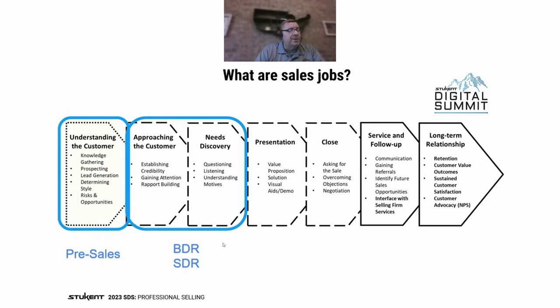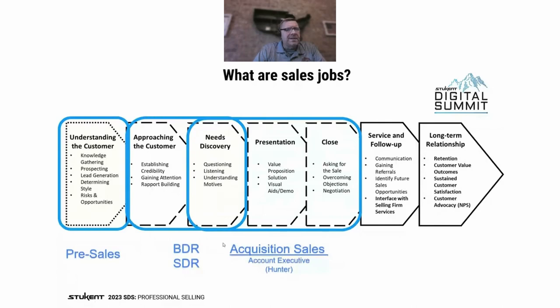They follow leads to the point of getting a meeting scheduled for the next person in the process — which I call acquisition sales. That title encompasses many things across many companies. The idea is going out to get business — this would be your hunter. Account Executive is a term that often goes with this. Somewhere in needs discovery, the prospect moves from the BDR/SDR to the actual sales rep — the hunter, the account executive. So now we have three people already, and we haven't even closed a sale yet.